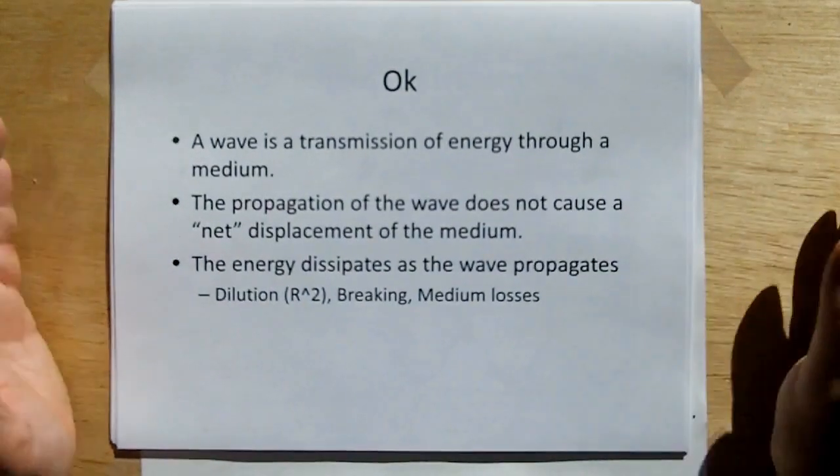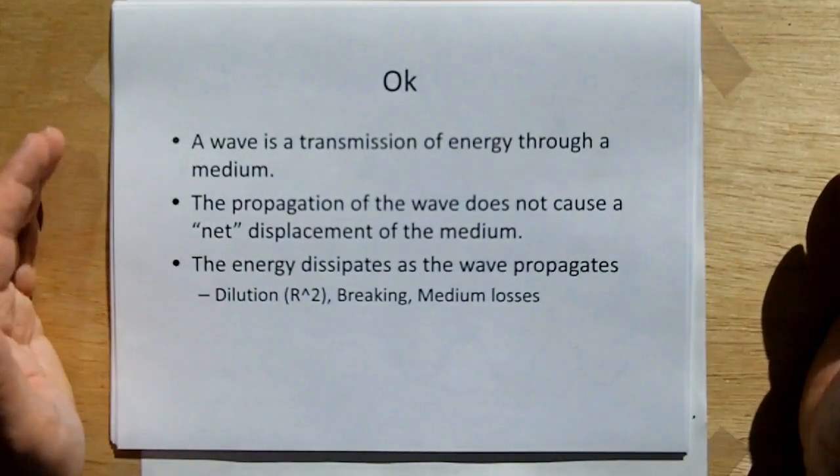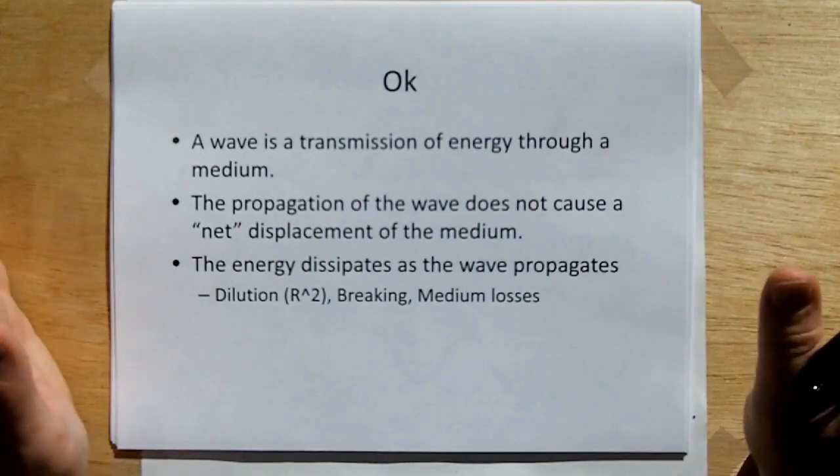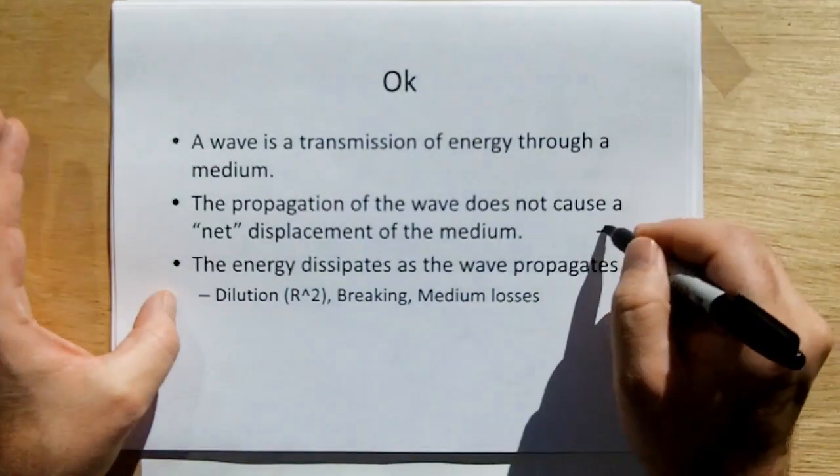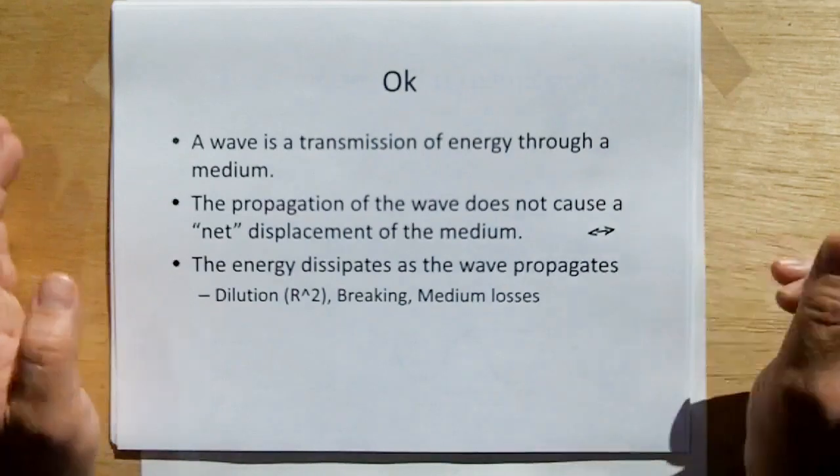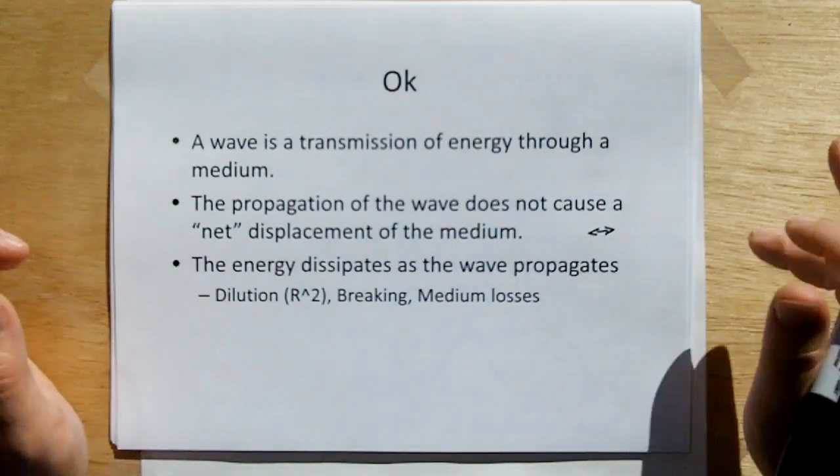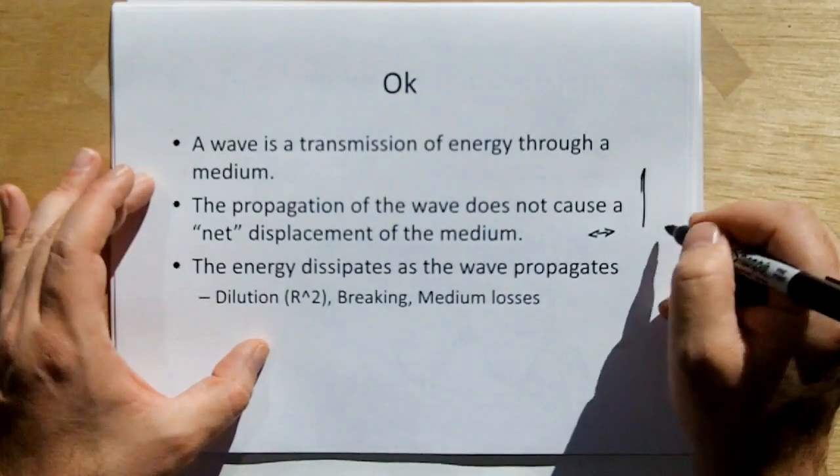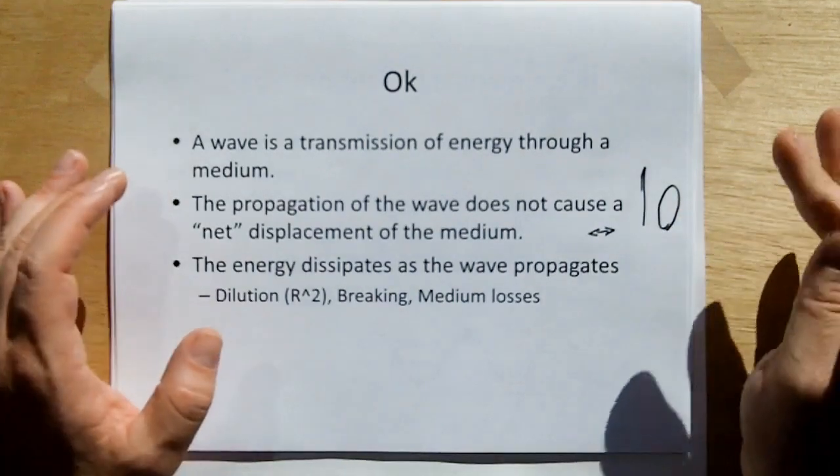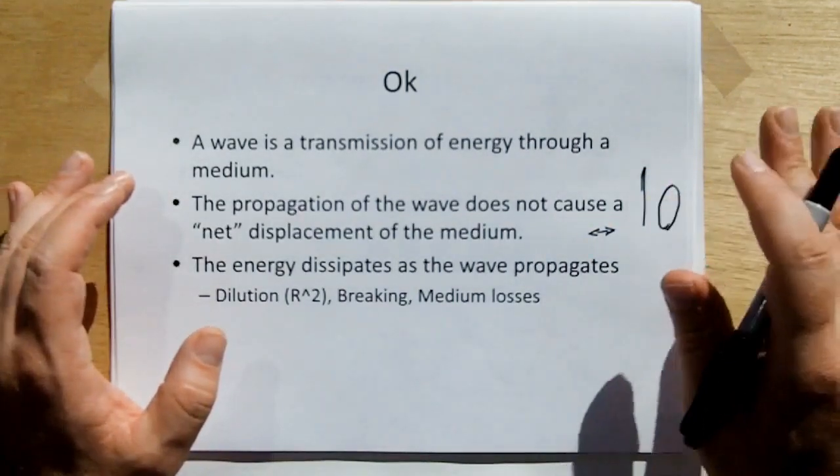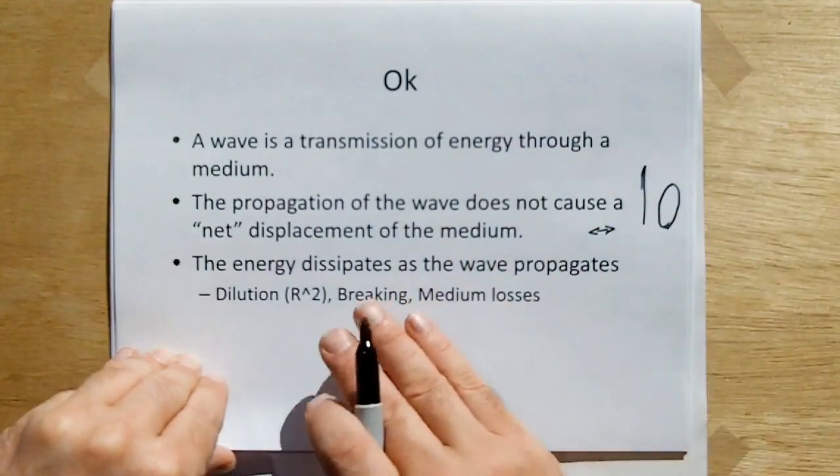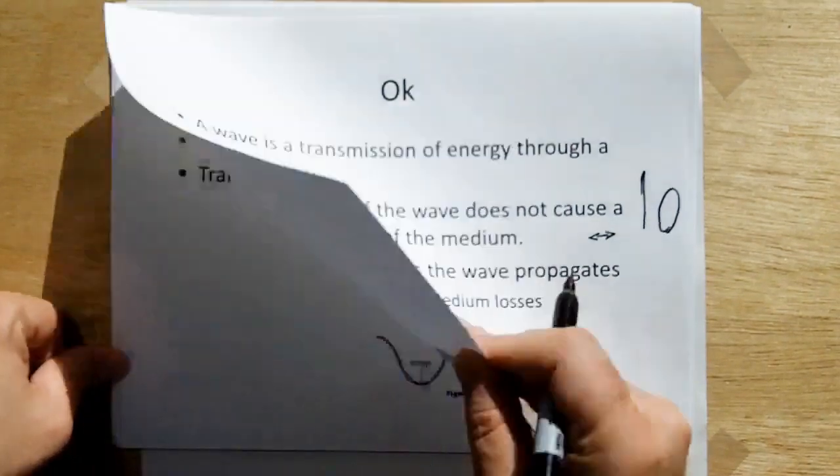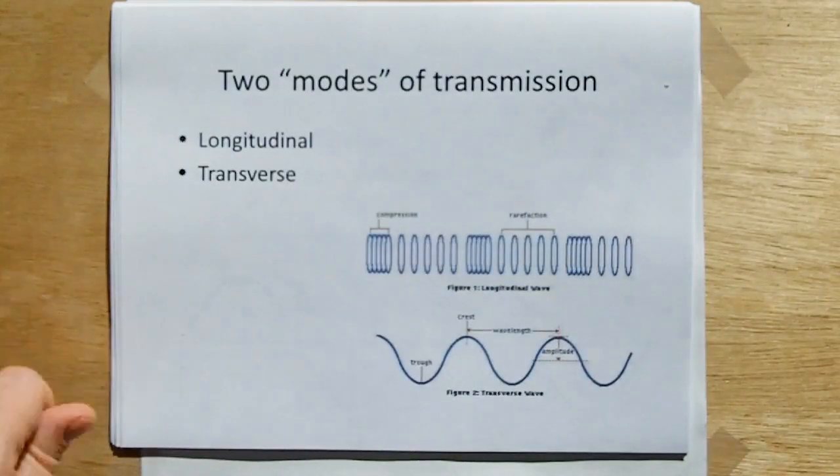So a wave is a transmission of energy through medium. The propagation of the wave does not cause a net displacement. However, what we're going to show is complementary motion, which I just showed you with the cork, because the cork doesn't go straight up and down. The cork will actually take either a circular or an elliptical motion as the wave passes. And we know the energy is dissipated as the wave propagates through dilution. Now there's two modes of transmission.